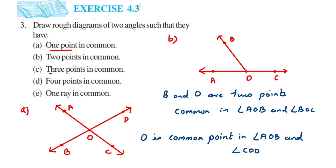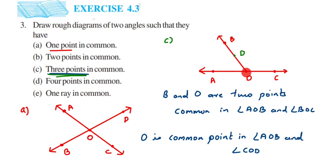Next they are saying three points in common. Three points in common means on the same line. We have angles AOB and BOC, where O and B are already common. On this common arm OB, you can take another point D. So D, B, and O are the three common points — just add another point on the same arm.